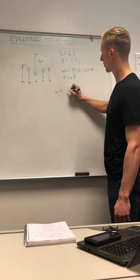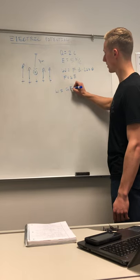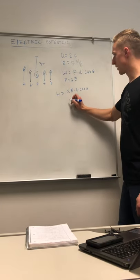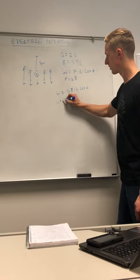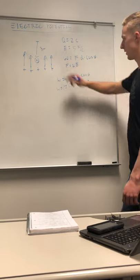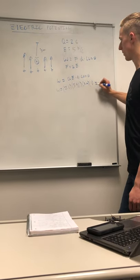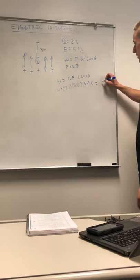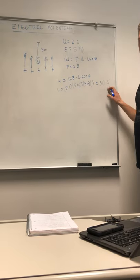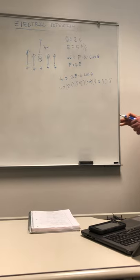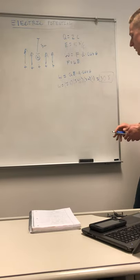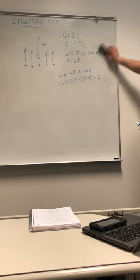Plugging everything in: work equals charge times electric field times distance times cosine of theta. So work equals two coulombs times five newtons per coulomb times three meters times cosine of zero, which is one. That gives us 10 times 3, which equals 30 joules. It's important to note that the units of electric potential energy are joules.